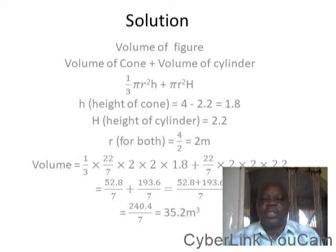The height of the cone is 4 minus 2.2, that will give you 1.8 meters. The height of the cylinder is 2.2 as given. Now the radius, both share the same radius, that will give you 4 divided by 2, which is 2 meters. Then by substituting into the formula, we have 1/3 × 22/7 × 2 × 2 × 1.8 plus 22/7 × 2 × 2 × 2.2. When you evaluate that, you get your final answer to be 35.2 m³.